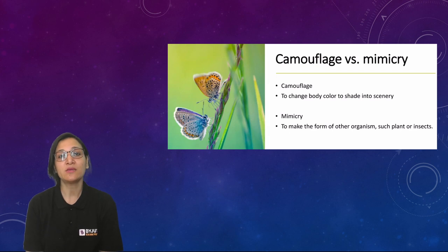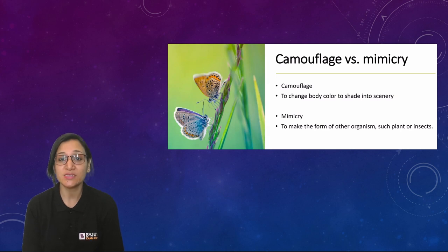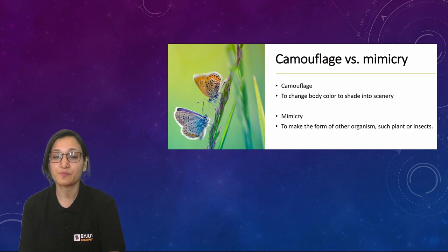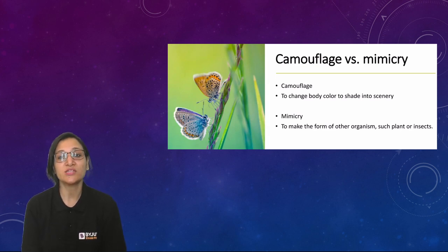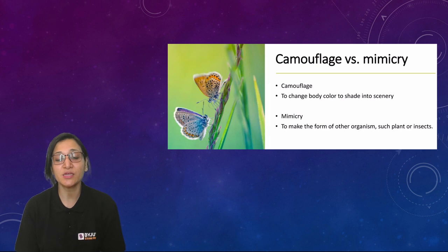Mimicry is when an organism copies another in all ways — its color or its behavior. When an organism is copied like this, it is called mimicry.